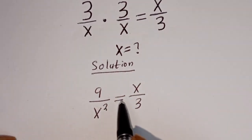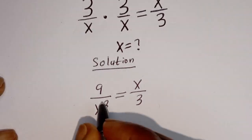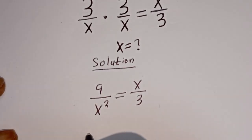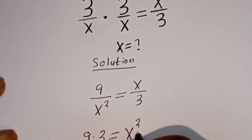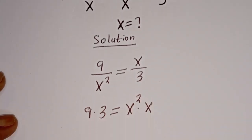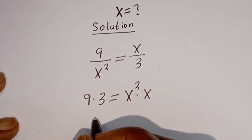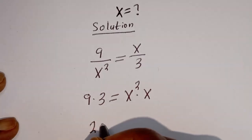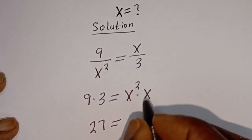And from here we can cross multiply. That is, 9 multiplied by 3 is equal to s squared multiplied by s. And this is 9 times 3, which is 27, is equal to s squared multiplied by s.